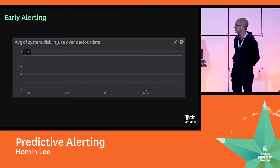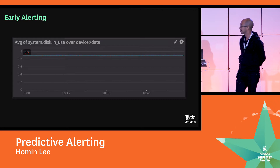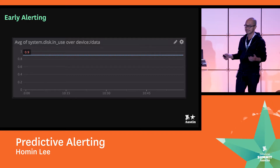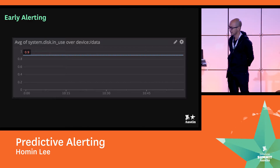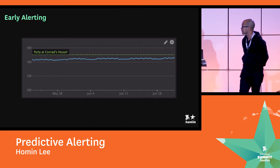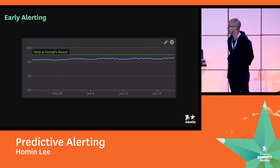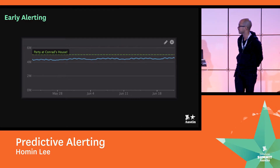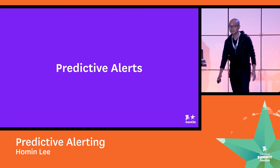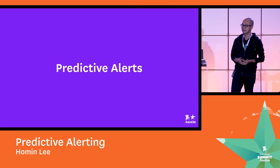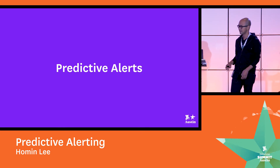Here we have an example of a disk that's hit 90% and an alert went off. It's pretty hard to tell if this is urgent or not — it also depends on the disk size. Depending on the size of the disk, who knows if you have weeks, months, days, or hours. A less dire use case might be figuring out when you're going to have that party at Conrad's house when you finally hit that five million user mark. What we really want is predictive alerts — we want to be able to tell you: hey, your disk is going to fill up in a week, or maybe you should buy the guac now, you're going to hit five million users by tomorrow at 2 p.m.